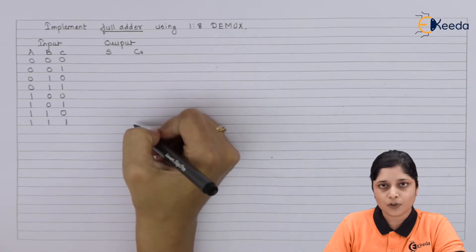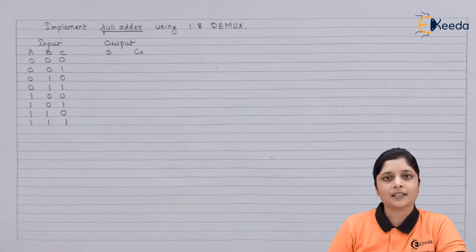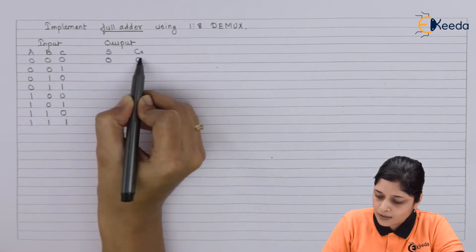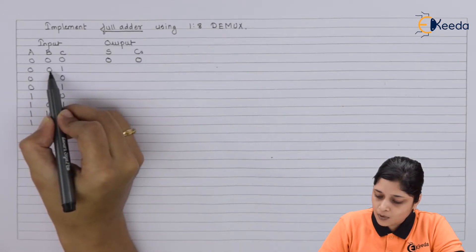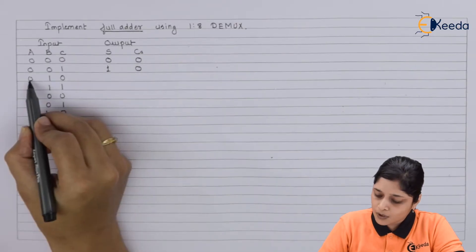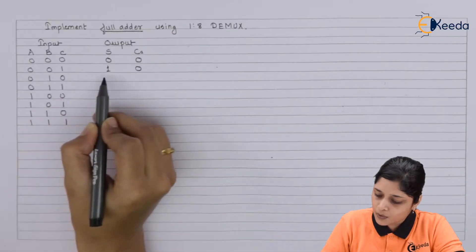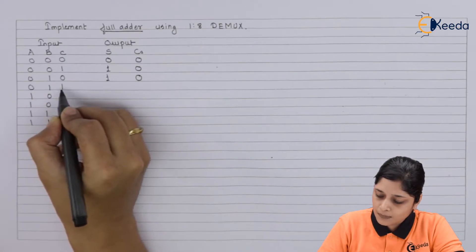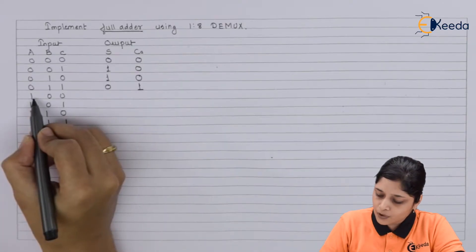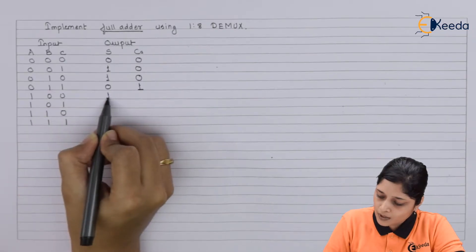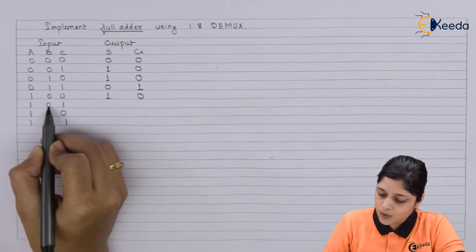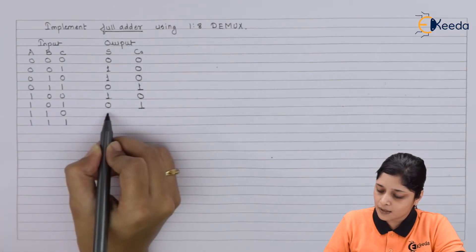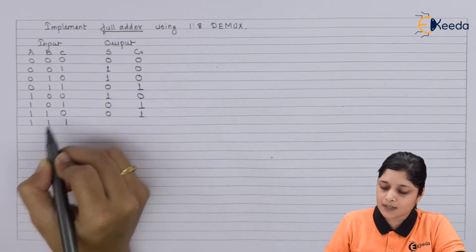After that you have to obtain the column for sum and for carry. Now for sum you have to apply the basic rules of binary addition. 0 plus 0 is 0, carry is 0. 0 plus 1 is 1, carry again 0. For the third term 0 plus 1 is 1, 1 plus 0 is 1, carry again 0. For the fourth term 0 plus 1 is 1, 1 plus 1 is 0, carry 1. For the next term 1 plus 0 is 1, carry 0. For the next term 1 plus 0 is 1, 1 plus 1 is 0, carry 1. Then 1 plus 1 is again we have 0, carry 1, and 0 plus 0 is 0.